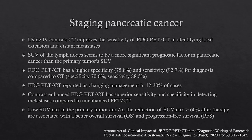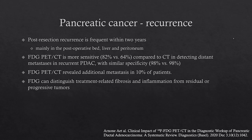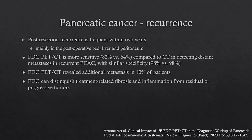If the primary tumor has a low SUV max, or if after therapy the SUV has decreased by more than 60%, the patient will typically have better overall survival and progression-free survival. For recurrence, it is typically frequent within two years, mainly in the postoperative bed, and also in the liver and peritoneum. FDG-PET has been described as being more sensitive compared to CT in detecting recurrent pancreatic cancer and can reveal additional metastases. It can also be useful in distinguishing treatment-related fibrosis and inflammation from residual or progressive tumors.